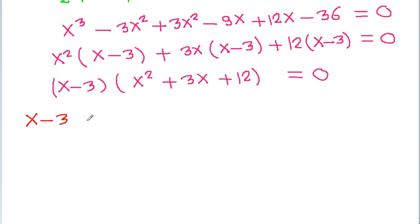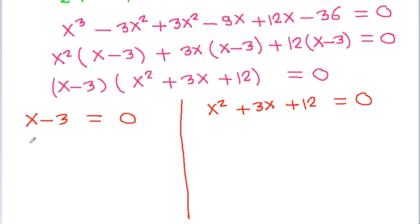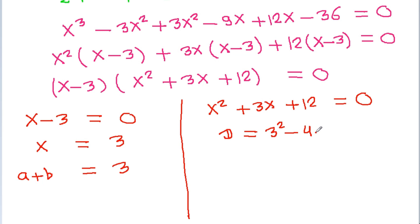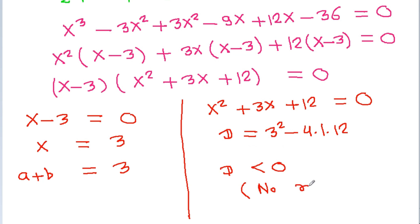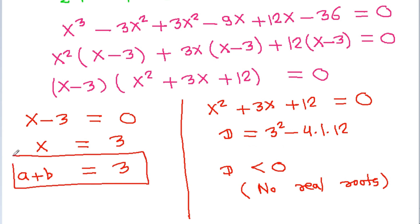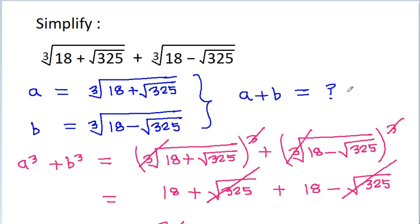So either x minus 3 is equal to 0, from which we get x is equal to 3, and x is A plus B, that is 3. And here if we check the discriminant, it is 3 squared minus 4 times 1 times 12, so d is negative, that means the quadratic factor will have no real roots. So A plus B is equal to 3.